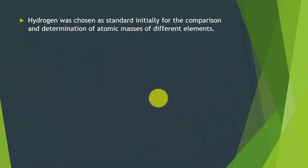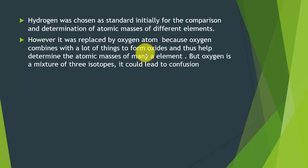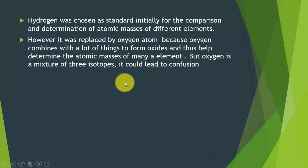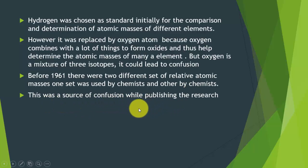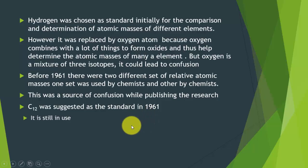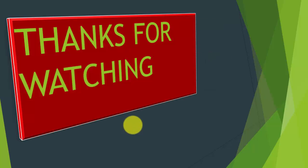Initially, hydrogen was chosen as the standard for determining atomic masses of different elements, but it was later replaced by oxygen because oxygen combines with many elements to form oxides, helping determine atomic masses of many substances. However, oxygen is a mixture of three isotopes, which could lead to confusion. Before 1961, there were two different sets of relative atomic masses — one used by chemists and another by physicists — which was a source of confusion in published research. So C-12 was suggested as the standard in 1961, and it is still in use today.